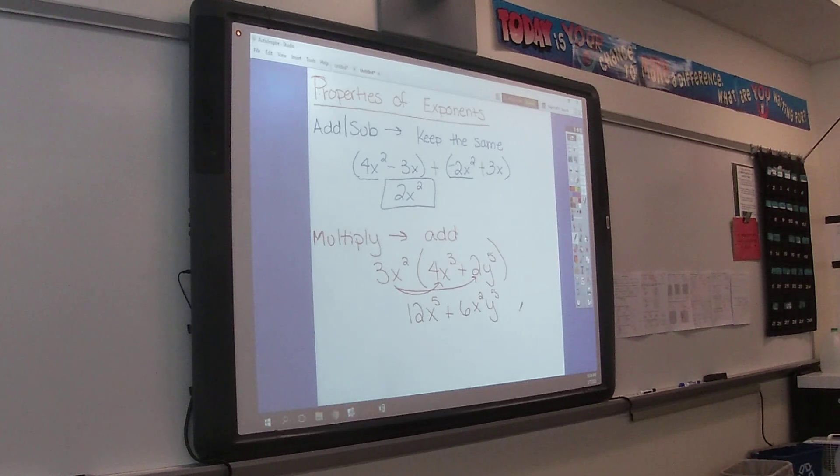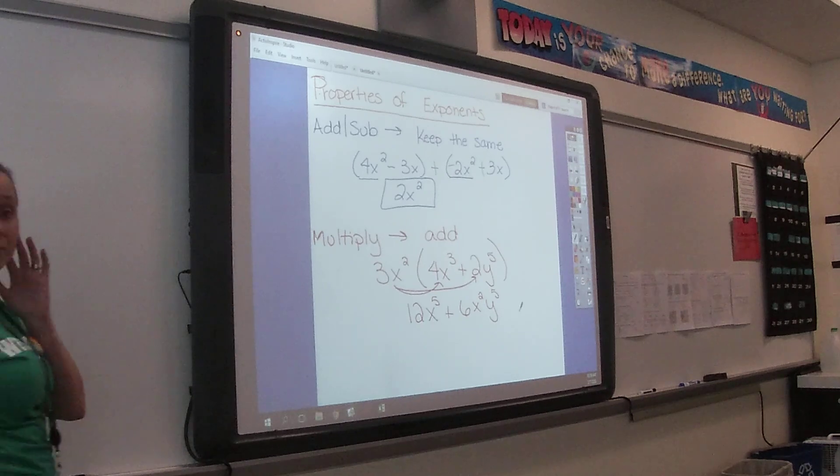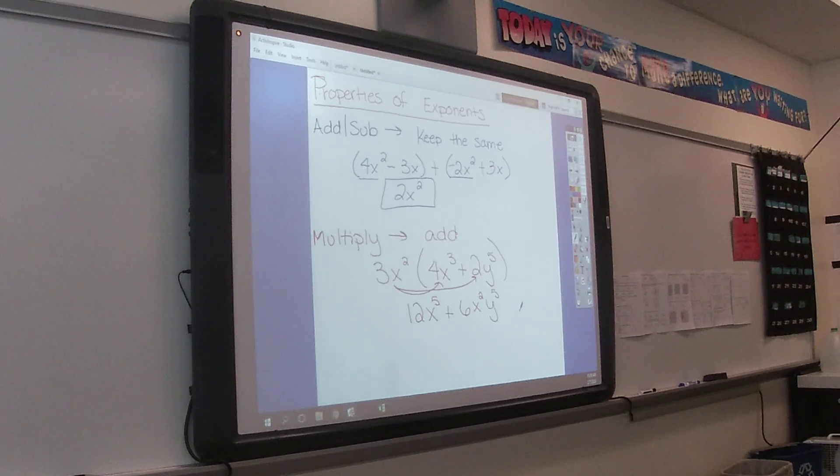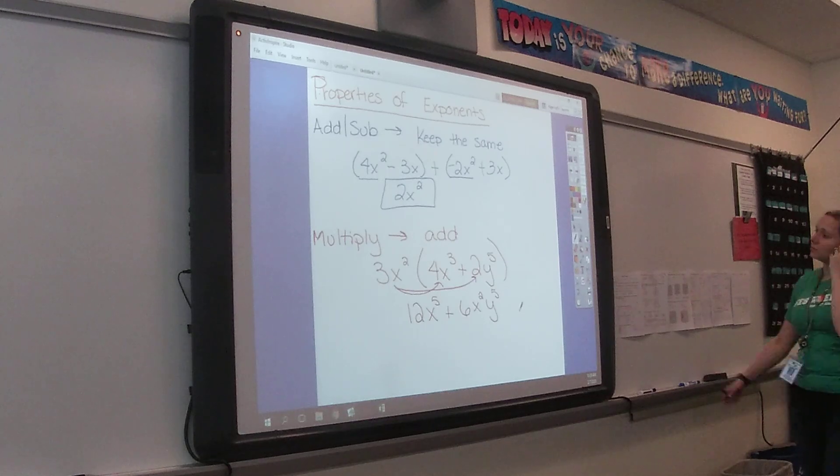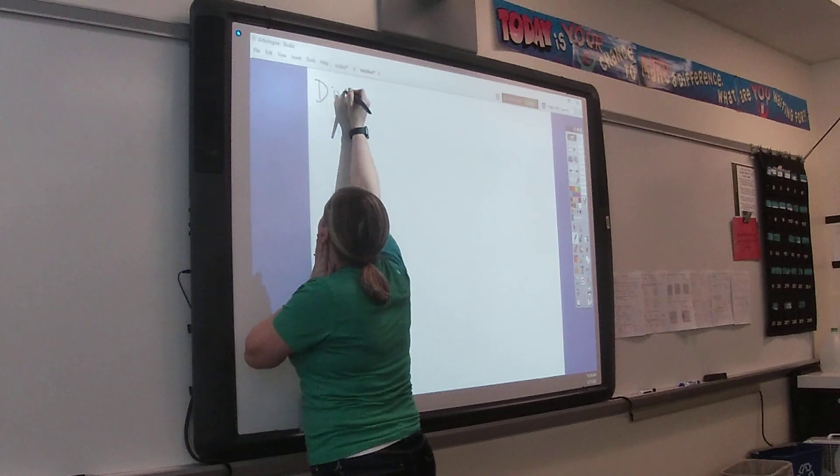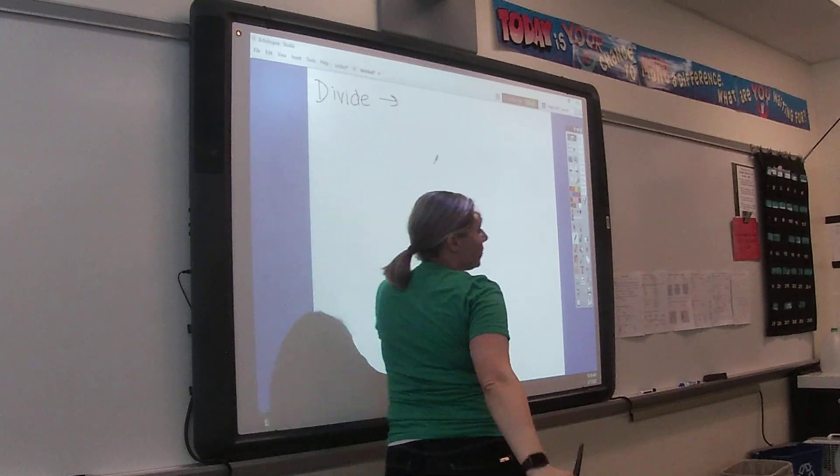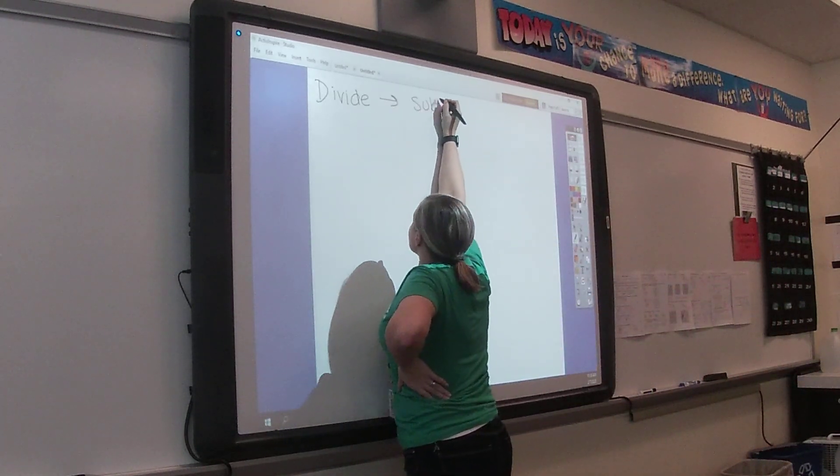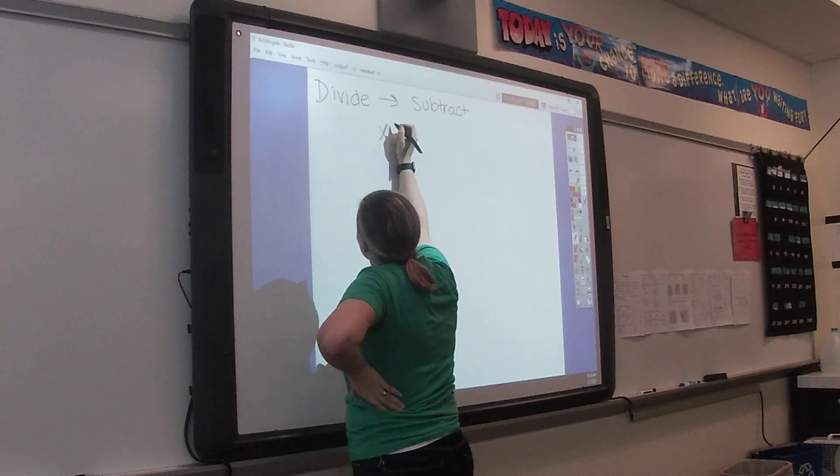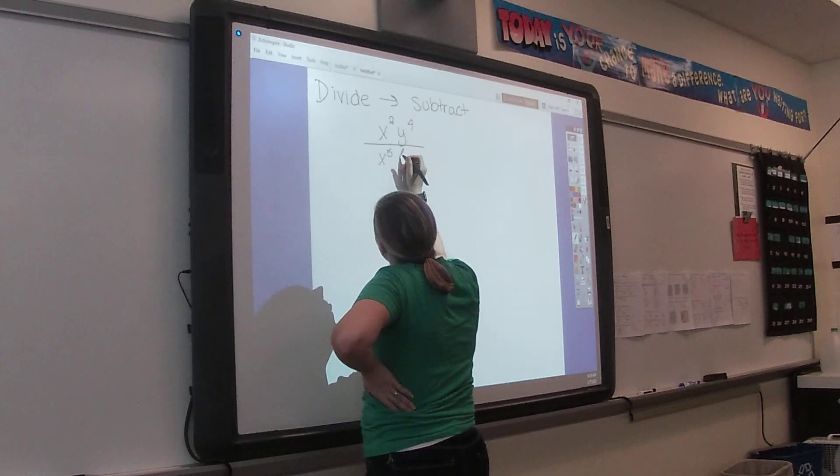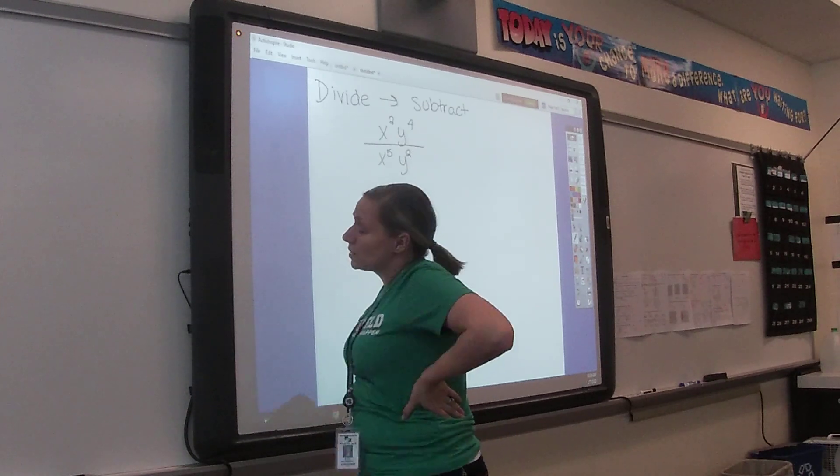You're going to have to know how to multiply a binomial times a binomial, or we would do that double distributing. If we are dividing with exponents, what do we do? Subtract.